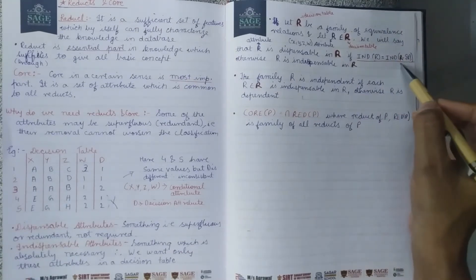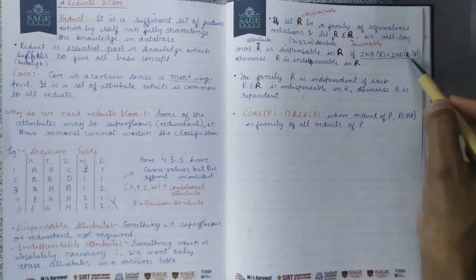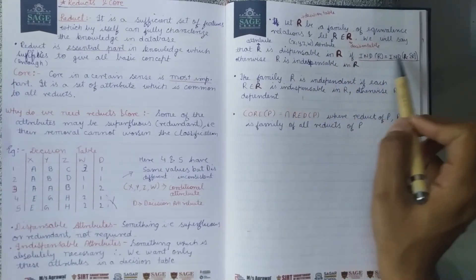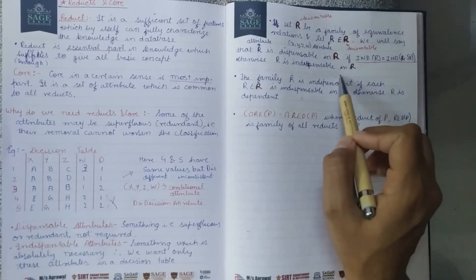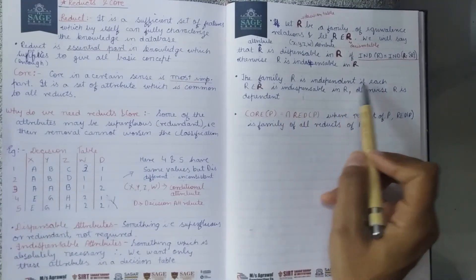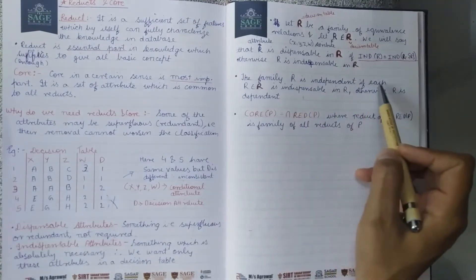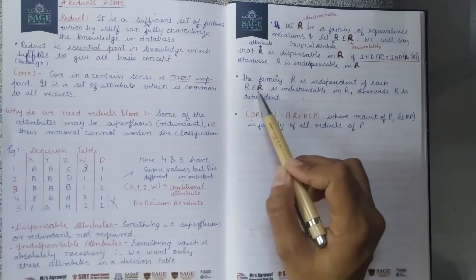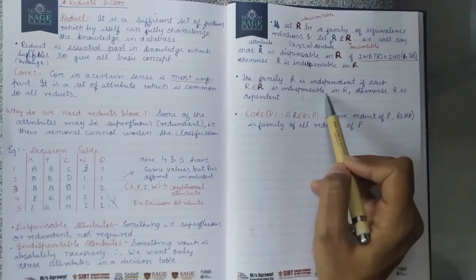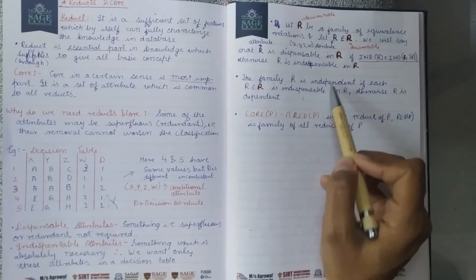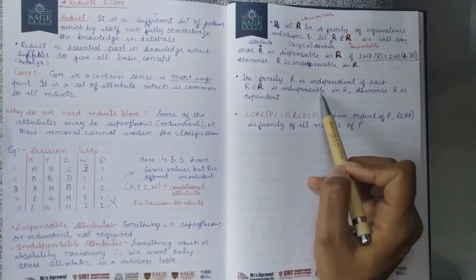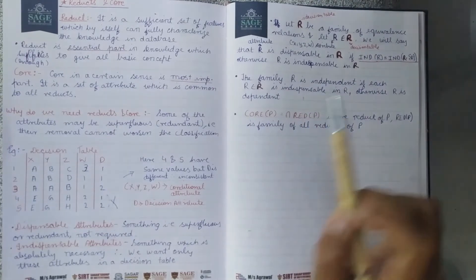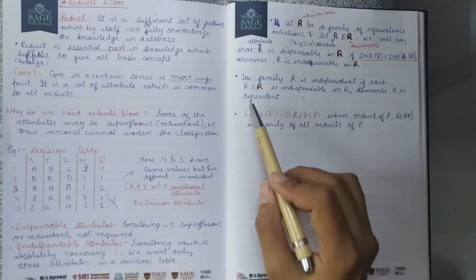If the indiscernibility of the attribute and the indiscernibility of the full relation are the same after removing r, then r is dispensable. If they are not equal, r is indispensable — meaning important. The family R is called independent if each attribute in R is indispensable. Otherwise, R is dependent.